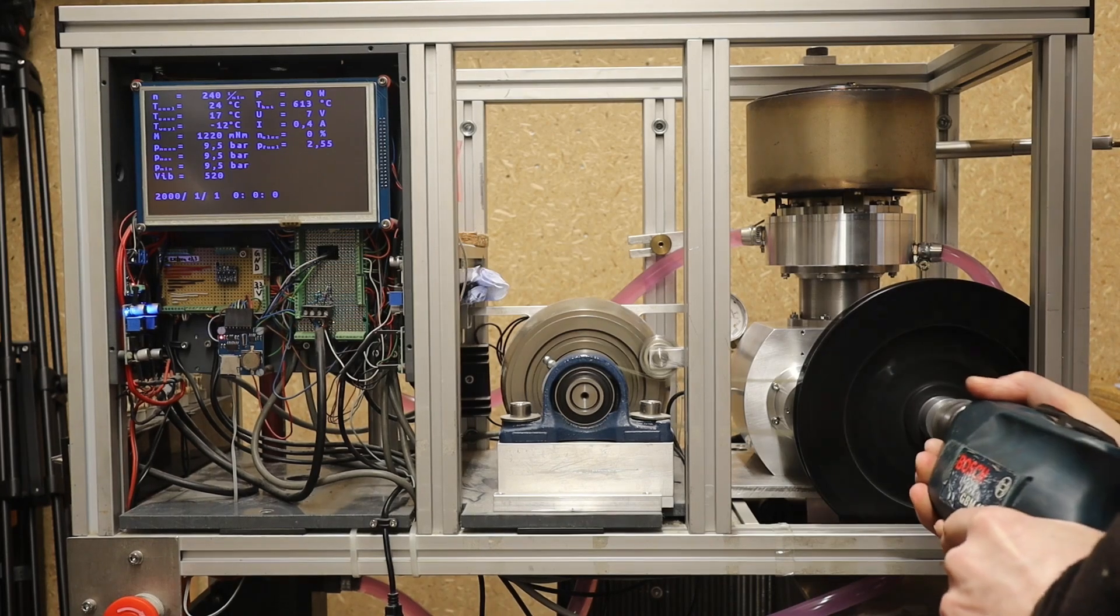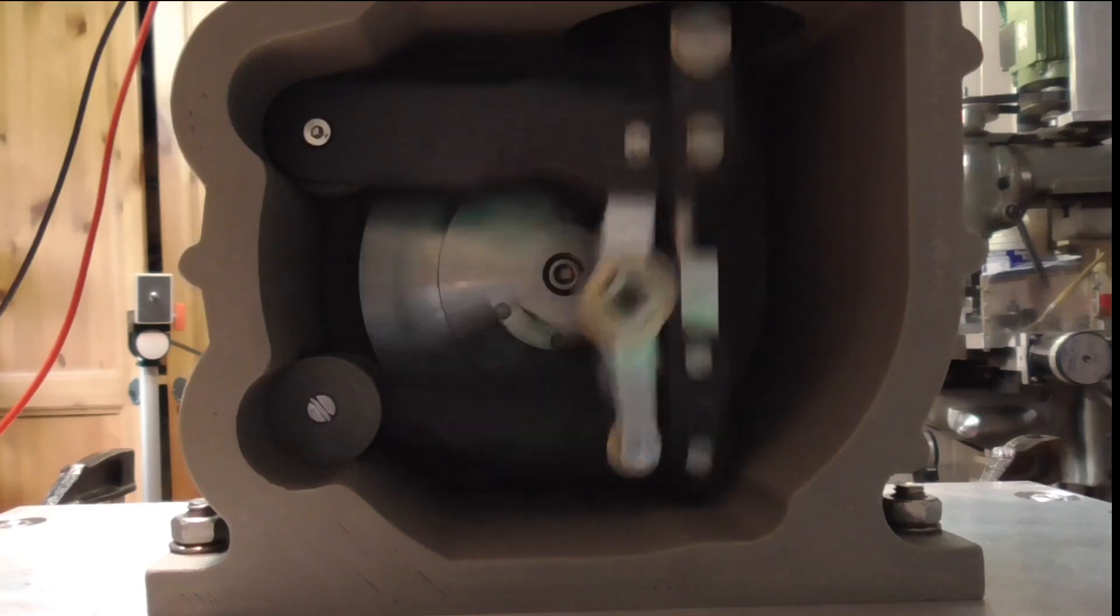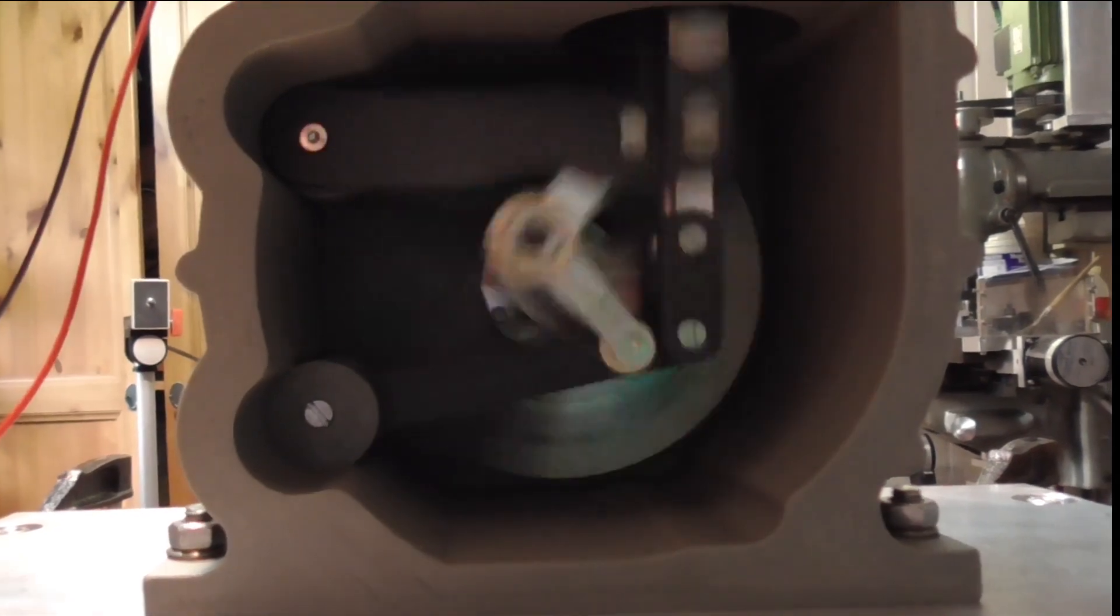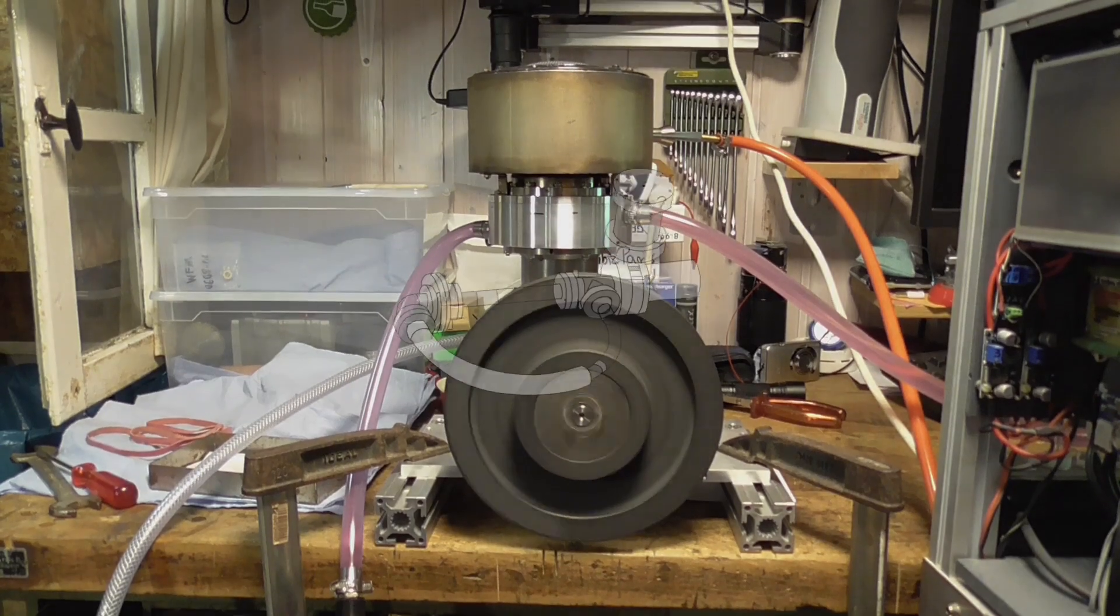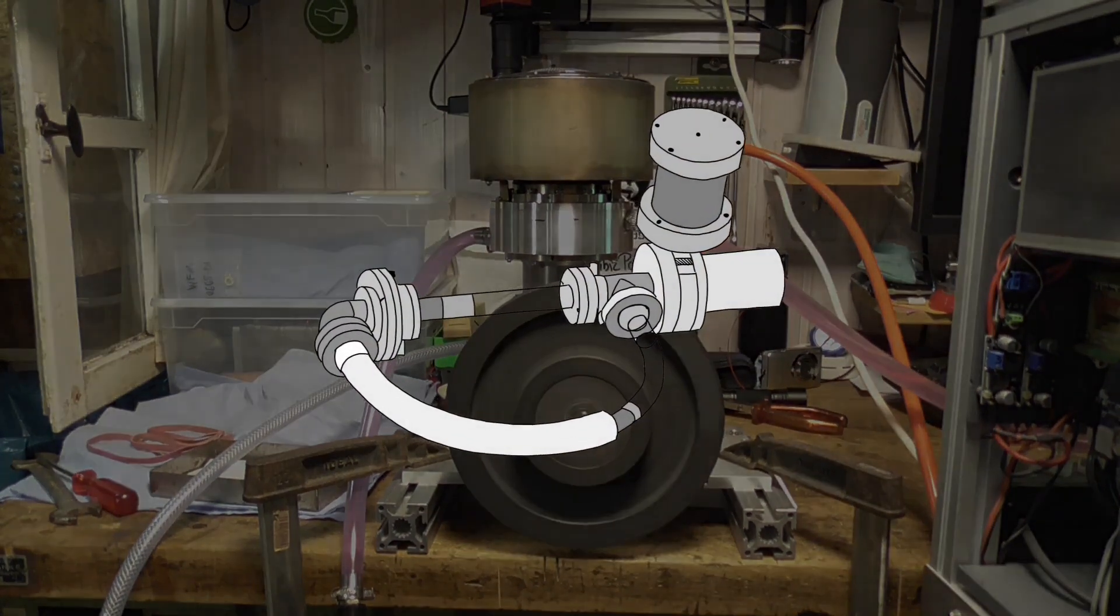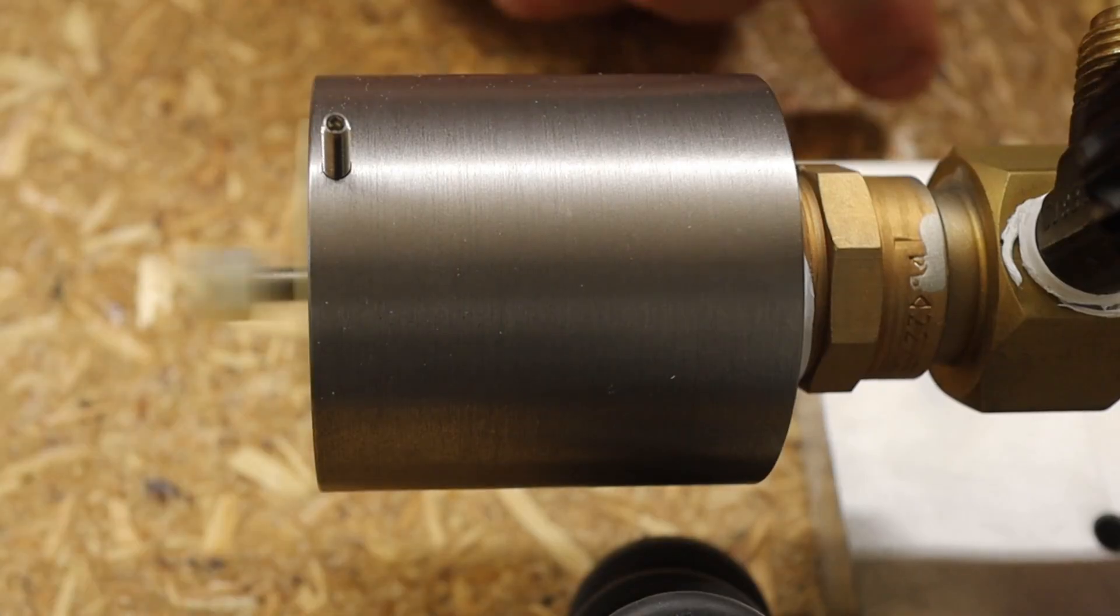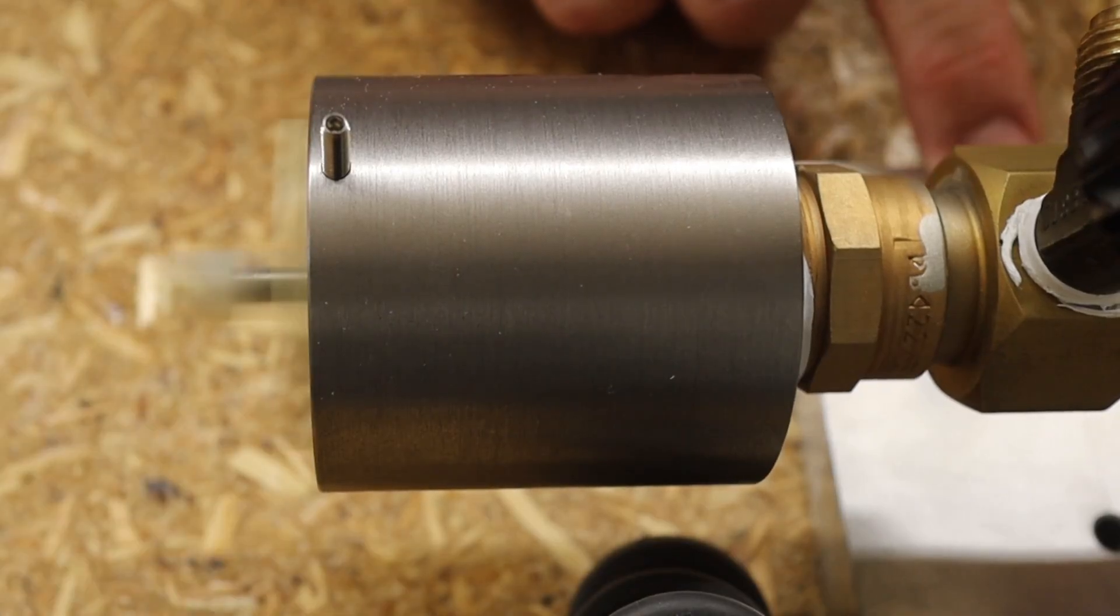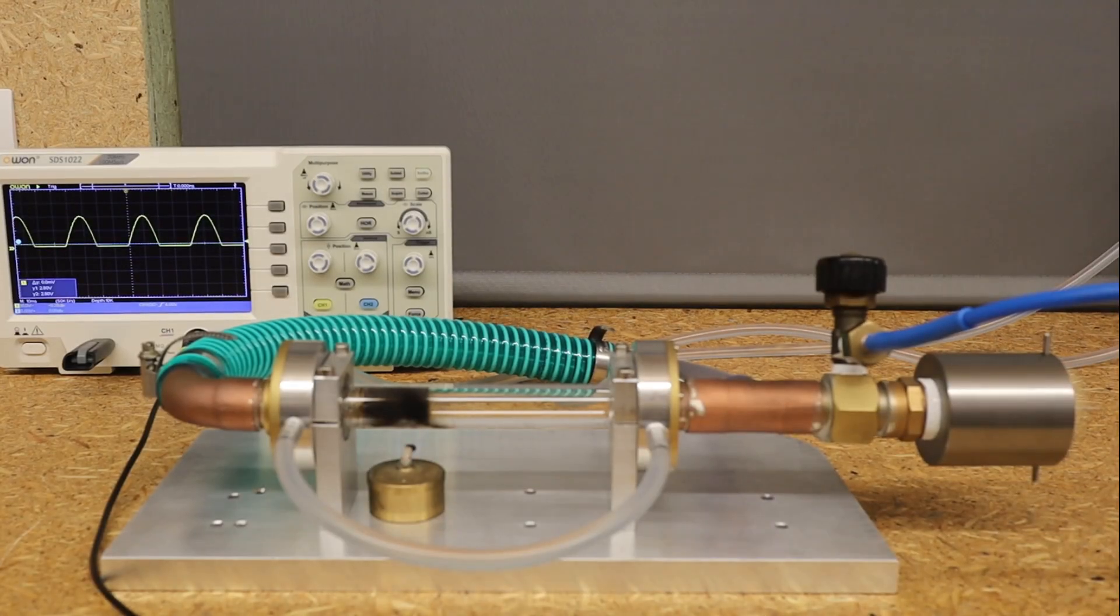All of the Stirling engine concepts I had previously tried presented me with more or less unsolvable technical problems, which led me to the ingeniously simple principle of the thermo-acoustic Stirling. The aim is to achieve an electrical output of 100 to 500 watts in order to heat and cover our electricity requirements with this combined heat and power plant.